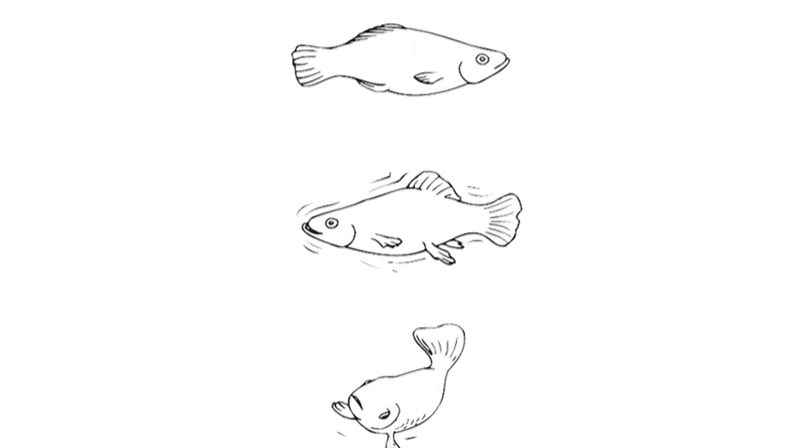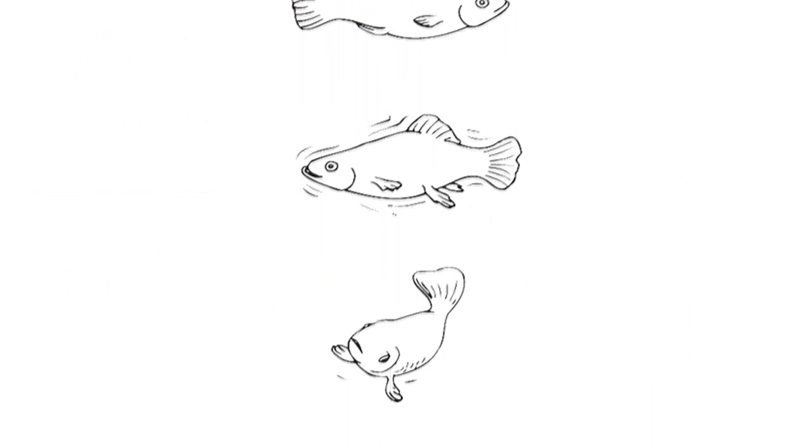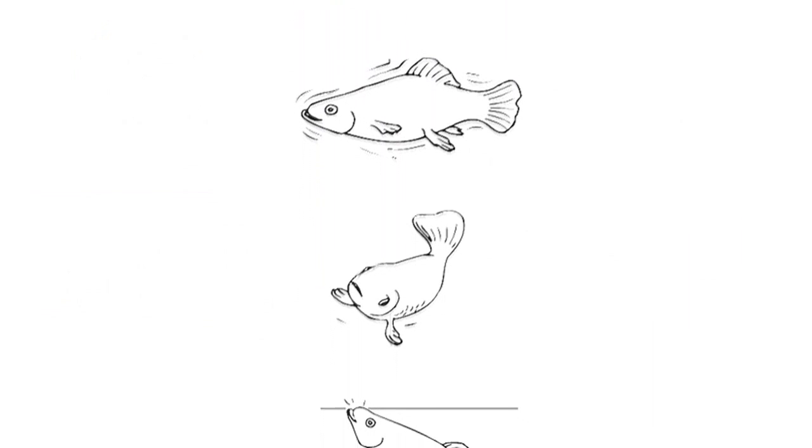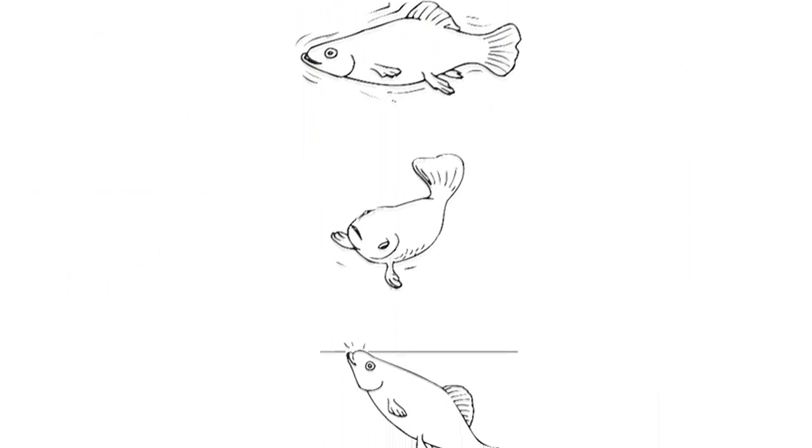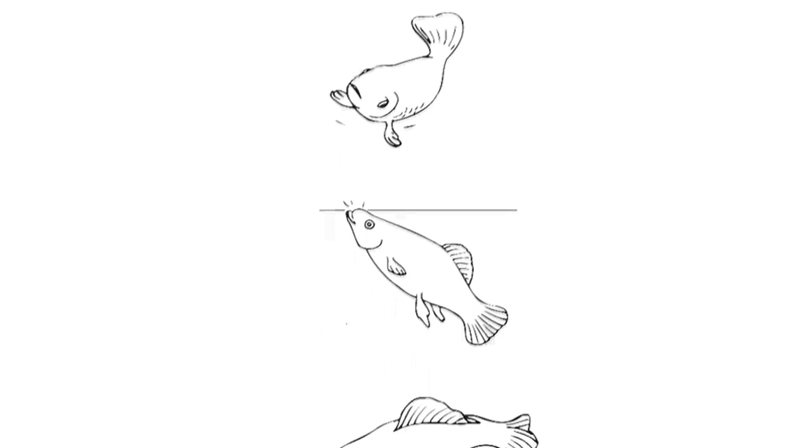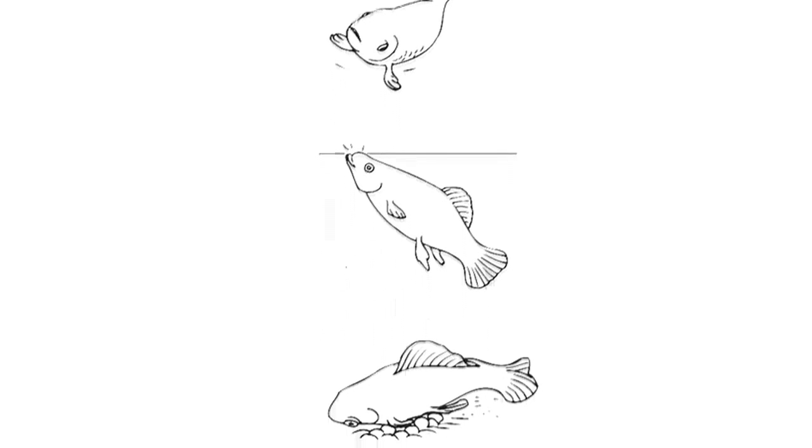Behaviors that are a sign that something is wrong include the fish's fins clamped to its body instead of fanned out, shaking or twitching, swimming sideways or tilted to one side, hiding, loss of appetite, gasping at the surface of the water, and rubbing itself against the walls or floor of the tank.